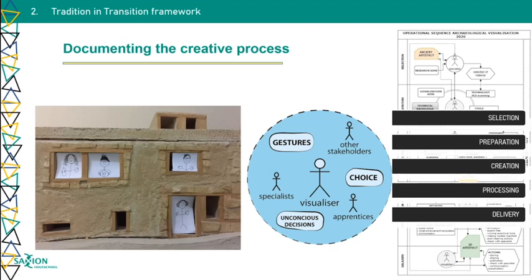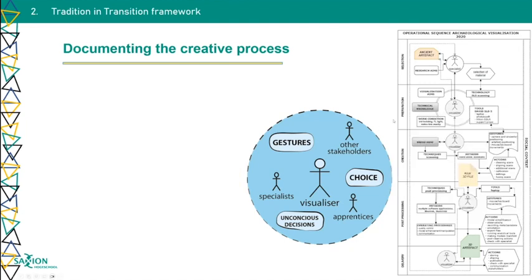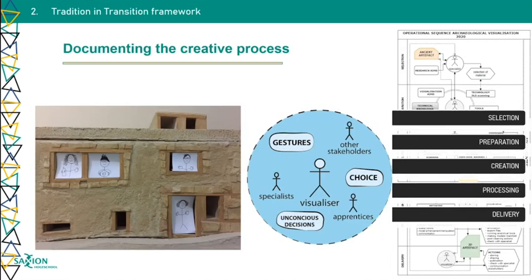The circle is an enlargement of the little circles in the diagrams illustrating the visualizer within its social realm. To the left of the circle, you can see the team in which the visualizer — me in this case — participated. I'm never doing this alone; maybe I'm operating the scanner alone, but the whole practice of selecting and the choice of what to document happens within a team of stakeholders.